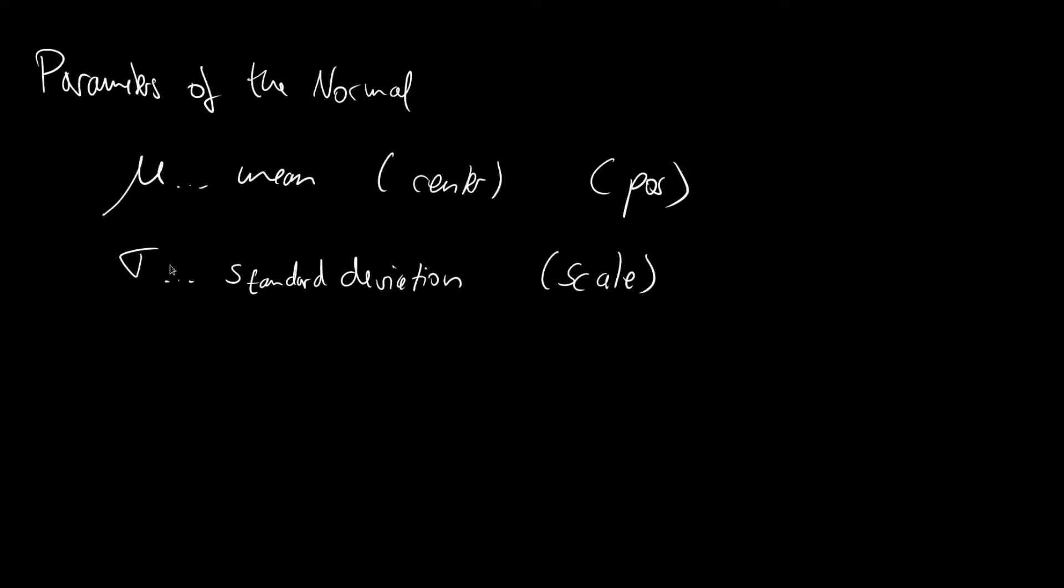And there is the shorthand notation that we can use which is that x is distributed according to p of x. Well this makes sense. And p of x is the normal distribution and the normal takes the two arguments mu and sigma.